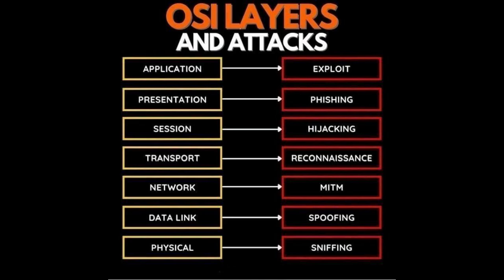The first layer is the Physical Layer. The physical layer deals with actual hardware concepts — hardware such as cables, network interface cards, and switches. At the hardware level, the type of attack on this layer may involve physical tampering or physical damage, such as cutting cables or destroying network equipment.